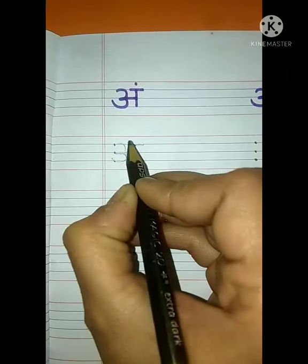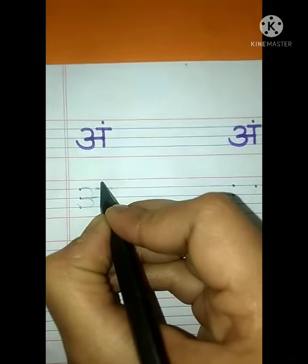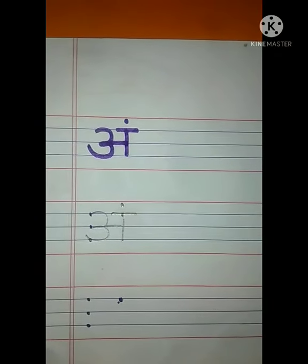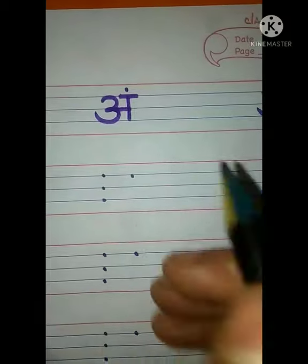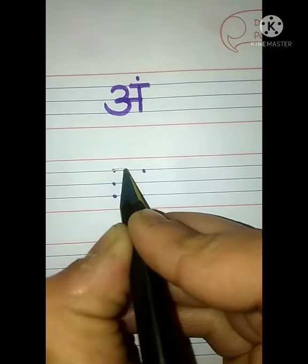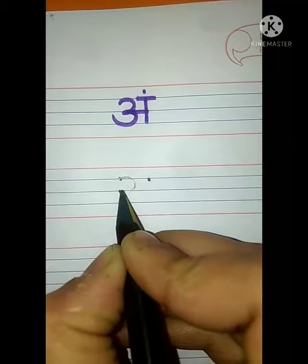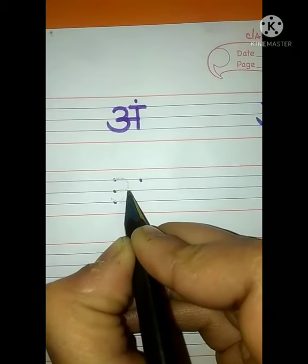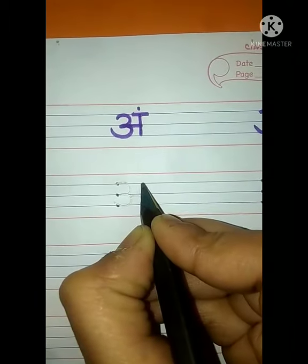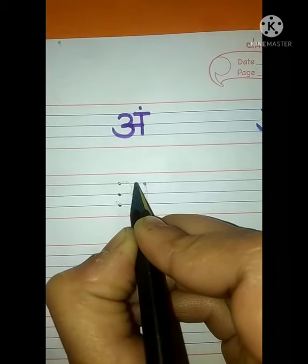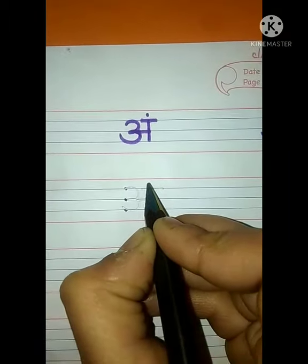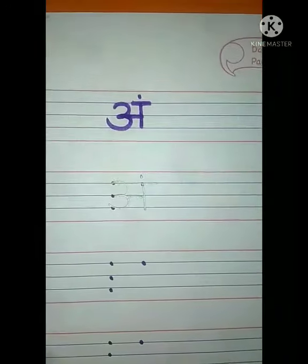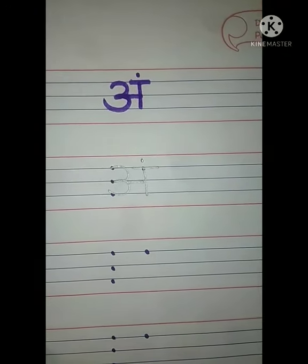Now we will make a standing line from the dot like this, and we will make a sleeping line on the top. And now we will make Ang ki bindu above the sleeping line like this. This is Ang se Angoor. Now we will make another Chotang. Make curve from first dot to second dot, make another curve from second dot to third dot. Now make sleeping line in between, standing line from the dot, sleeping line on top, and Ang ki bindu on top. This is Ang se Angoor. This is Ang se Angoothi.